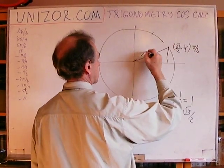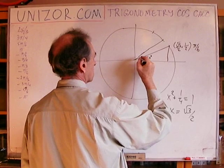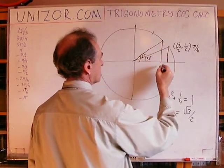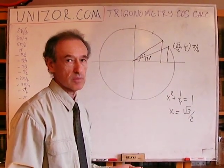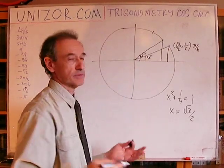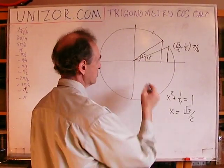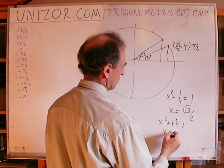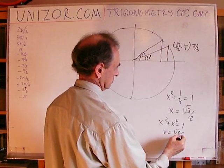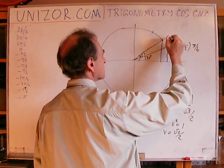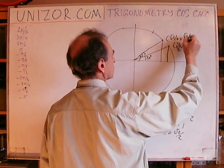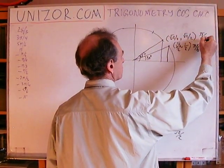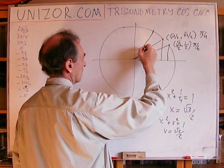The next basic angle is 45 degrees. The property of the 45-degree angle is that both catheti are the same, because both angles are 45 degrees in the right triangle. So if this is x, then x² + x² = 1, and the solution is x = √2/2. So the coordinates of this point are (√2/2, √2/2) — both abscissa and ordinate — and this is 45 degrees or π/4.